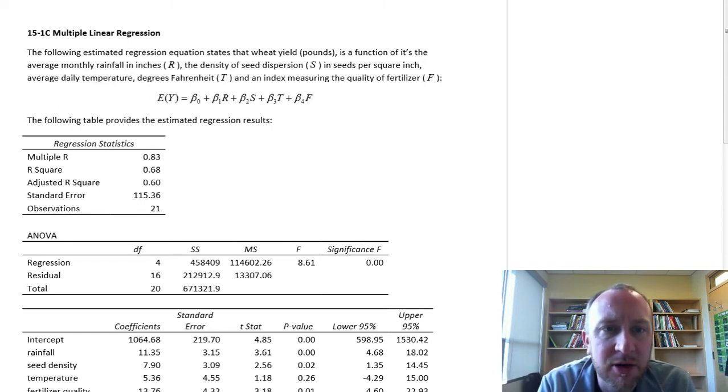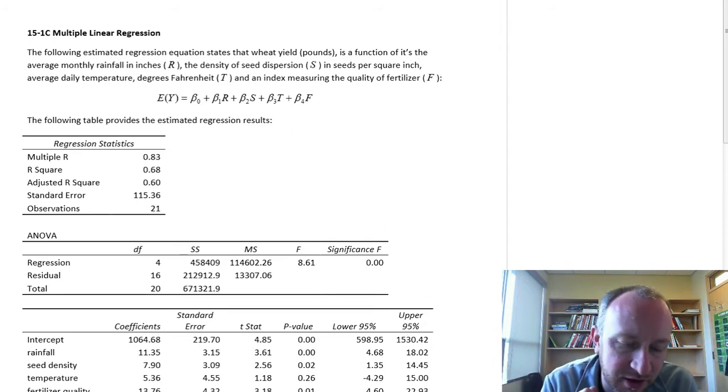In this model we have an equation that states that the wheat yield measured in pounds is a function of its average monthly rainfall in inches, the density of the seed dispersion in seeds per square inch, average daily temperature in Fahrenheit, and an index that measures the quality of the fertilizer, the chemical contents of this fertilizer.